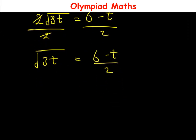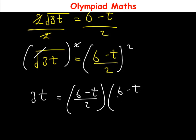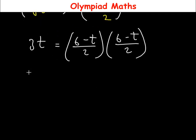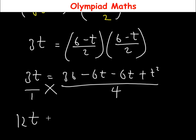With this, we are going to eliminate the square root by squaring both sides of the equation again. Squaring cancels the square root, so we have 3t = ((6 − t) / 2)², which is (6 − t)/2 multiplied by (6 − t)/2. Expanding: 3t = (36 − 6t − 6t + t²) / 4.